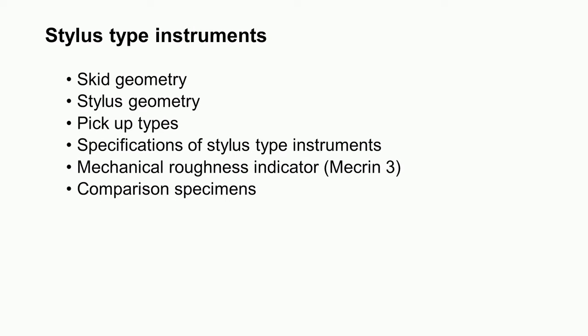Welcome to the series of lectures on metrology. We will start module 5, lecture 3. In the previous session, we discussed about various aspects of stylus type surface finish measuring instruments. In this lecture, we will study about skid geometry, stylus geometry, the various types of pickups used in surface finish measuring instruments, specifications of stylus type instruments, the mechanical roughness indicator, and comparison specimens.